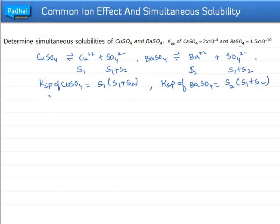If we divide the Ksp values of these two equations, we find that 2 by 1.5 × 10⁶ equals S1 by S2.